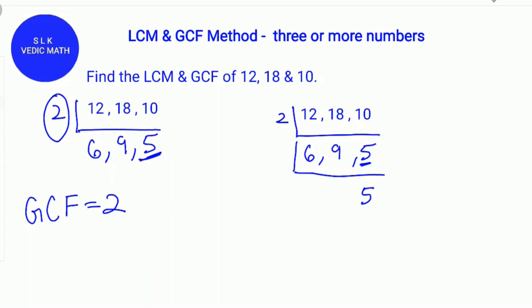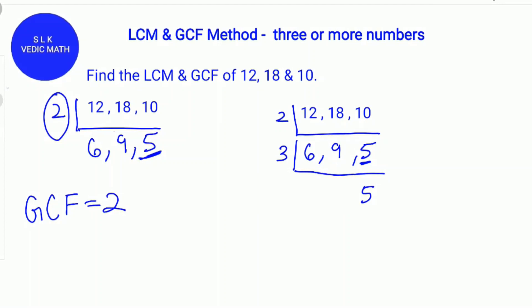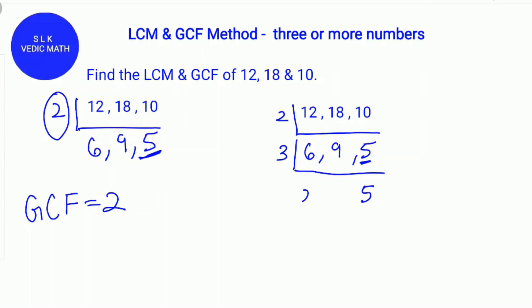Next, we find the common factor for 6 and 9, which is 3. Next, we find 3 times what is 6? 3 times 2 is 6.